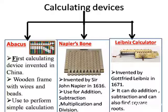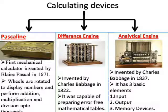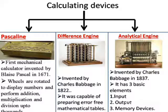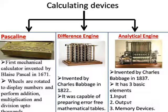The third device is the Leibniz Calculator. It was invented by Gottfried Leibniz in 1671. It can do addition, subtraction, and can also find square roots. The next is the Pascaline Calculator. Can you see these wheels over the image? These wheels are rotated to display numbers and perform addition, multiplication, and division up to thousands.